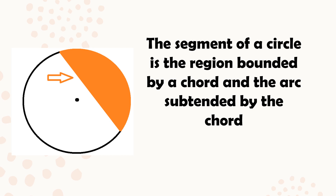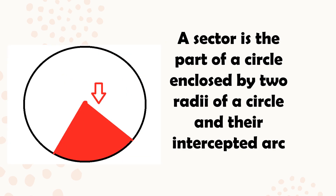The segment of a circle is the region bounded by a chord and the arc subtended by the chord — the region bounded by a chord and an arc. A sector is the part of the circle enclosed by two radii — radii being the plural form of radius — and their intercepted arc.